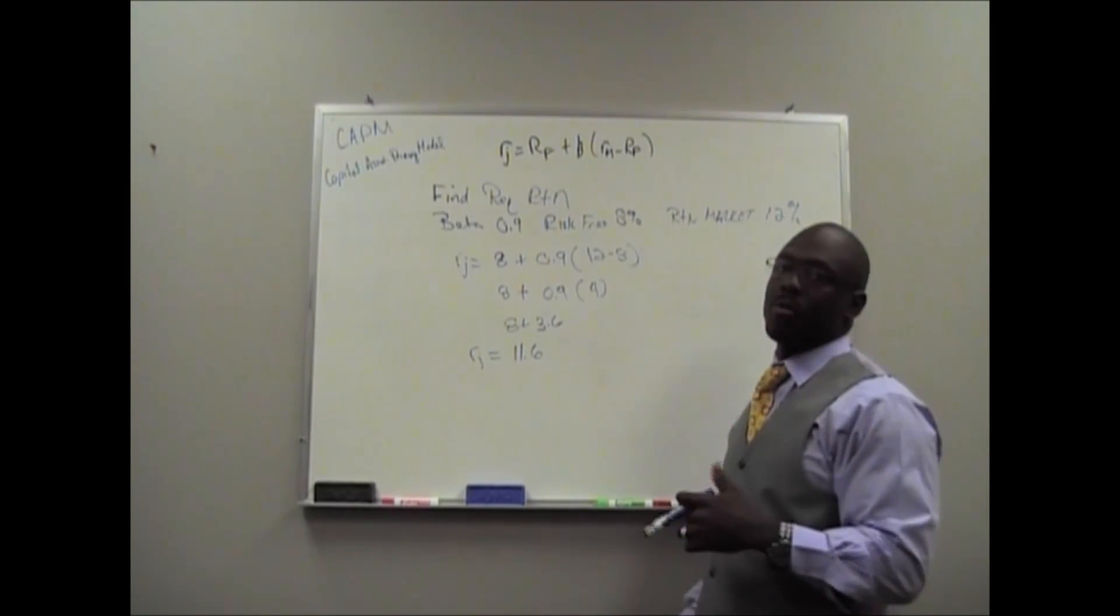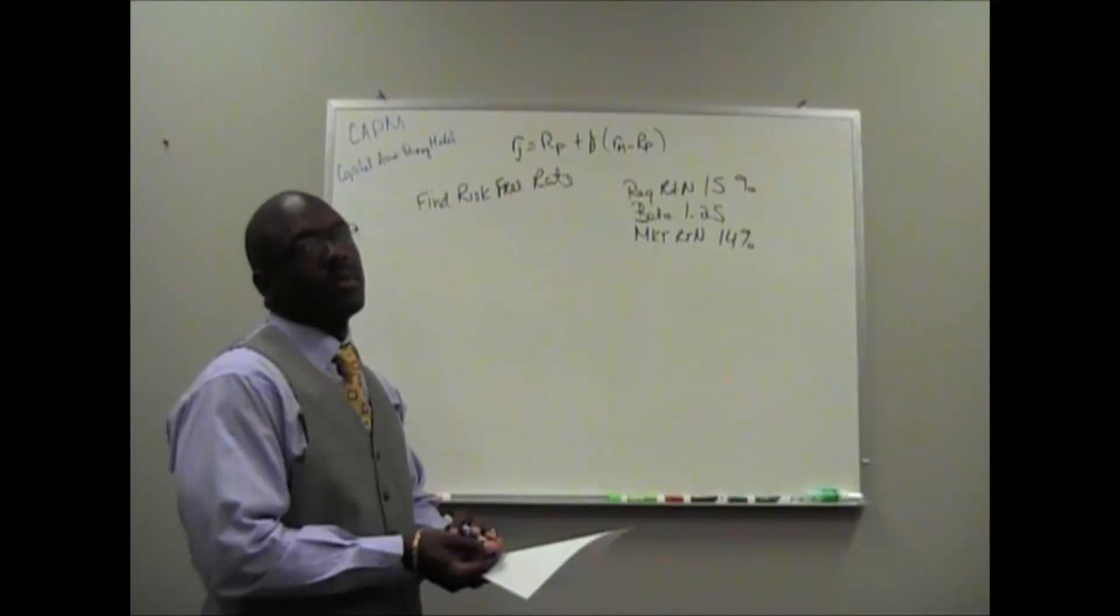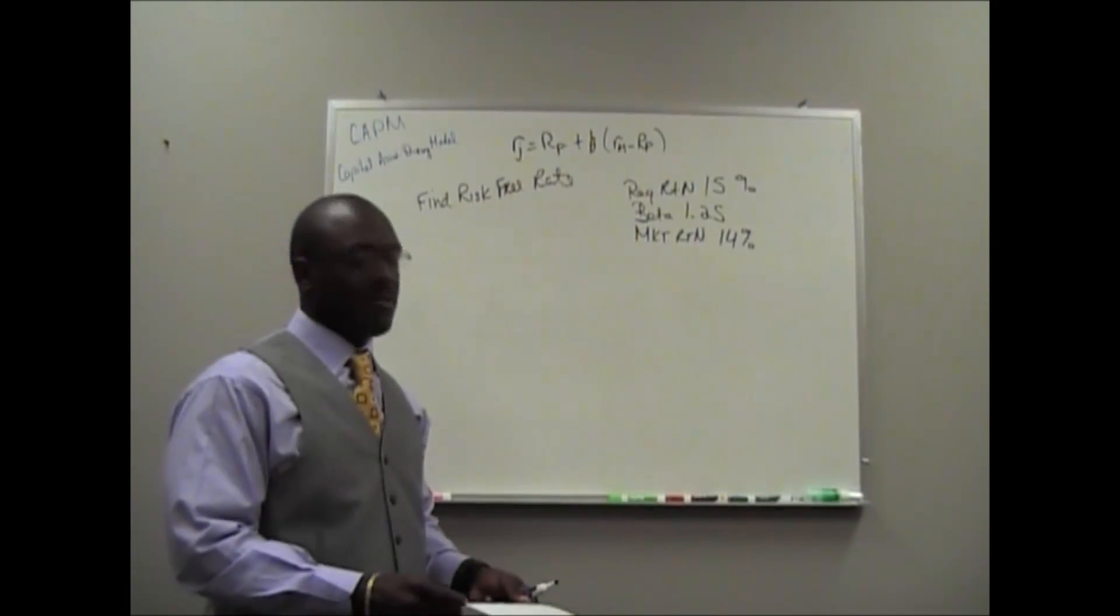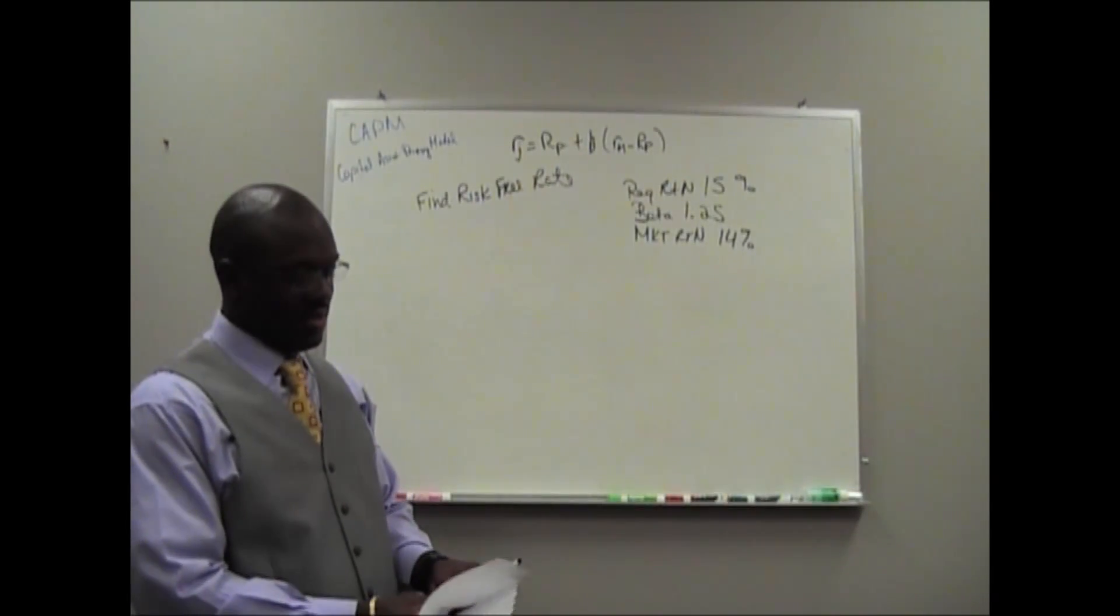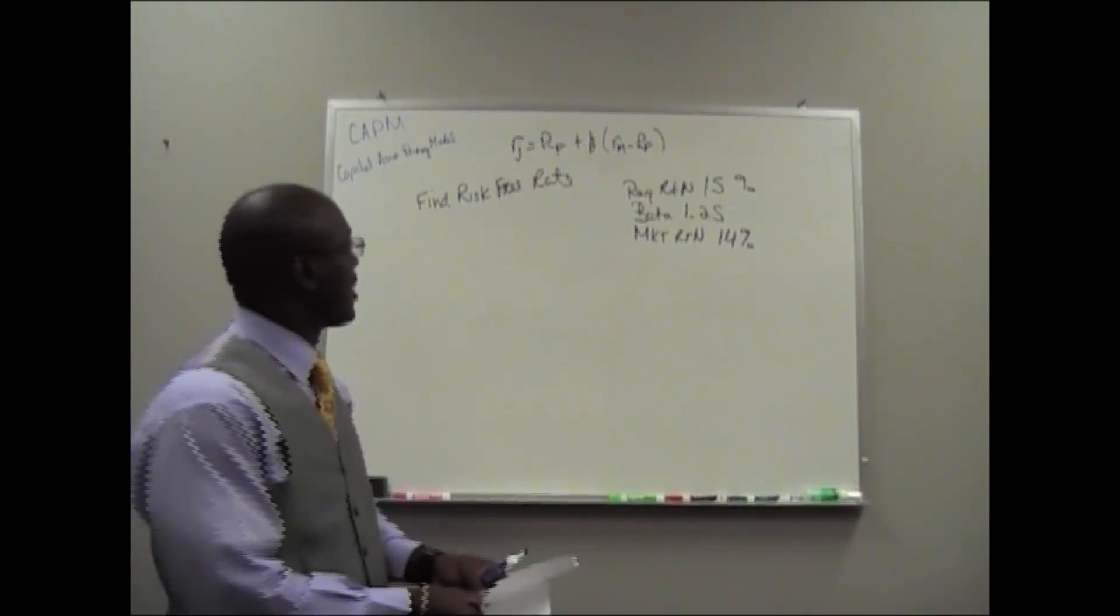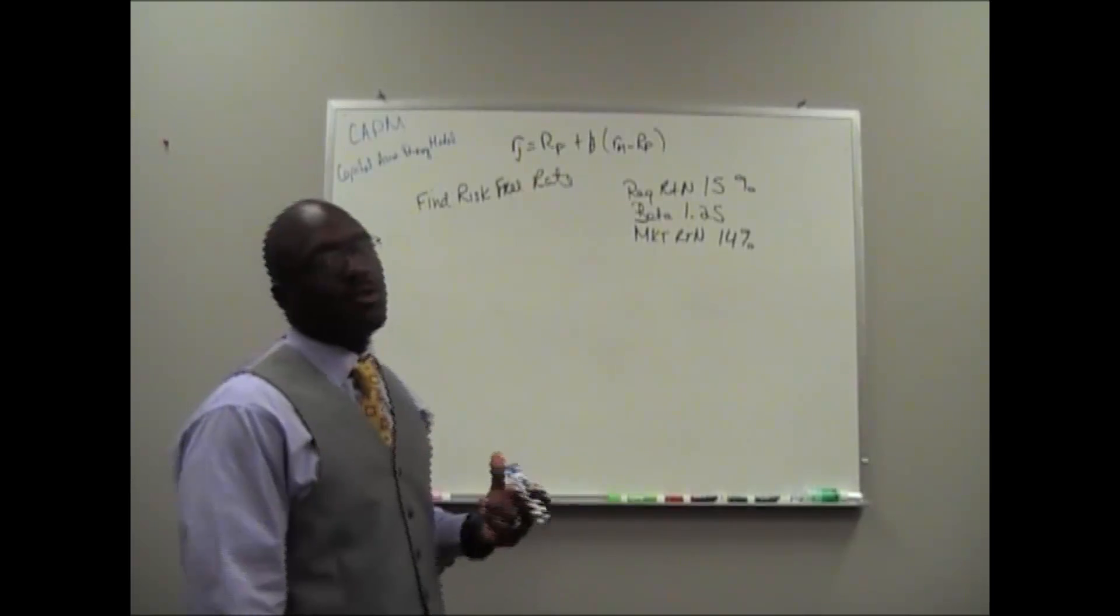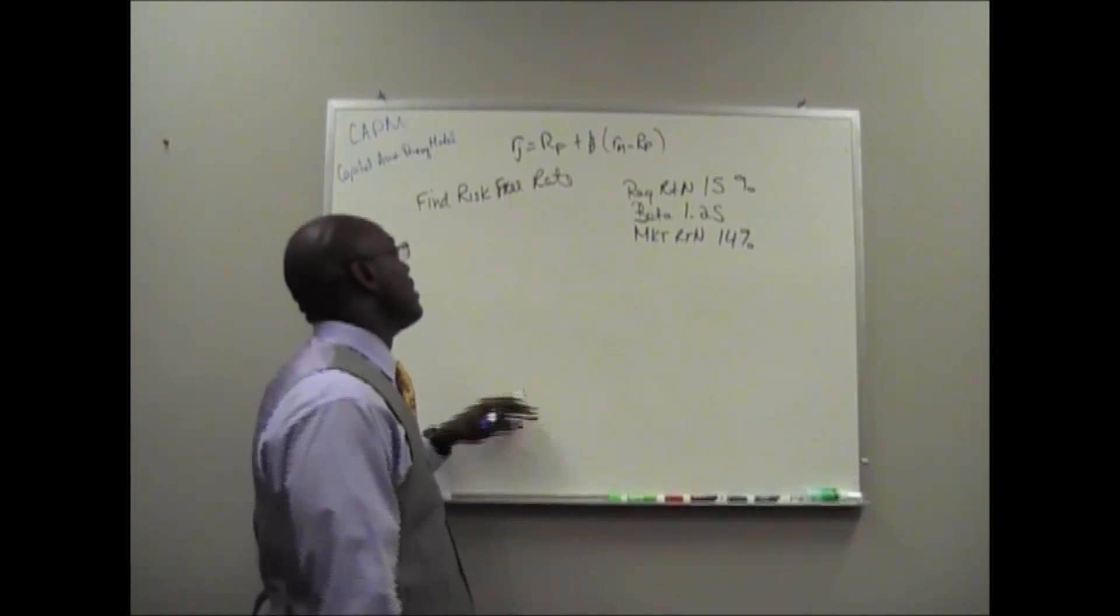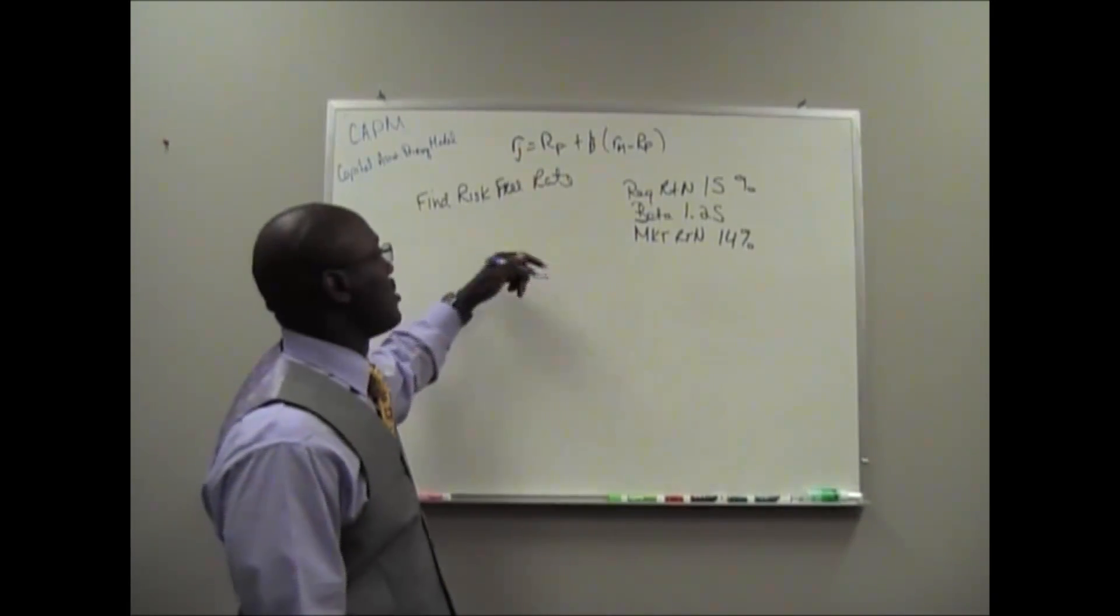We'll come back and do a problem where we have to find another element of the CAPM. In this problem we're going to try and find the risk-free rate given all the other information. I call this small scale algebra, because it's algebra on the smaller scale. What we have to do is use the same formula, but what I do to make it simple is place X for the variable that I'm looking for. In this case we're looking for risk-free rate, and that shows up in two places.